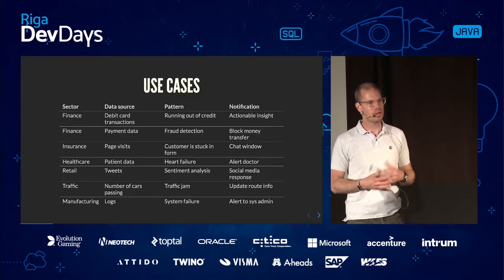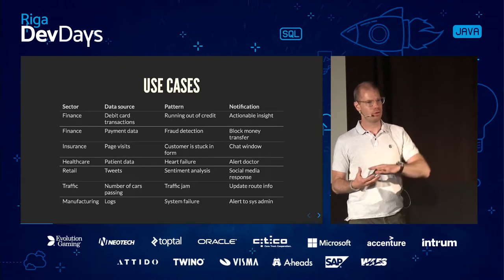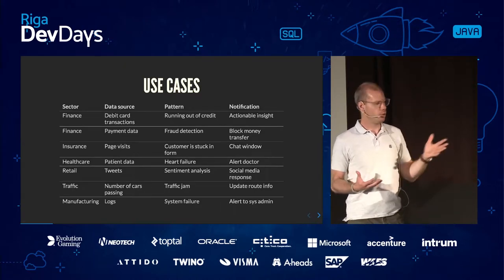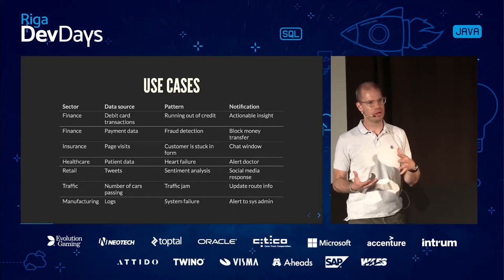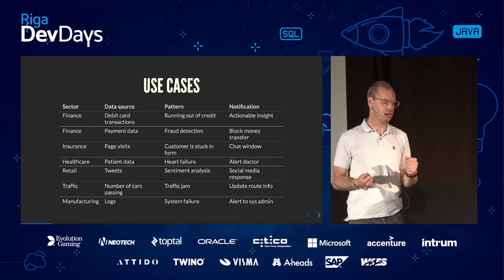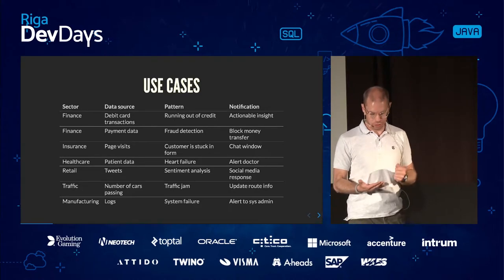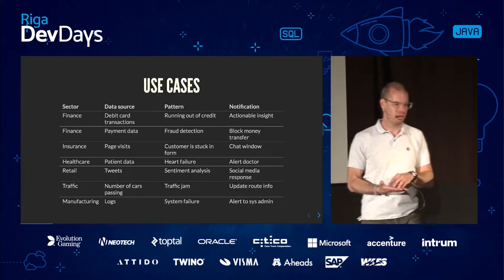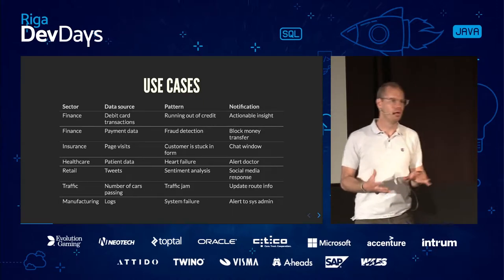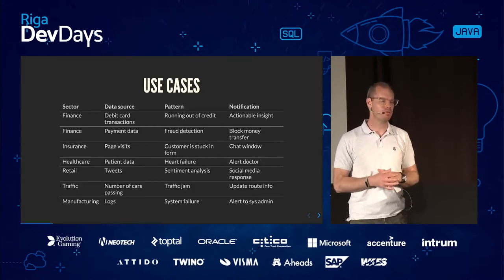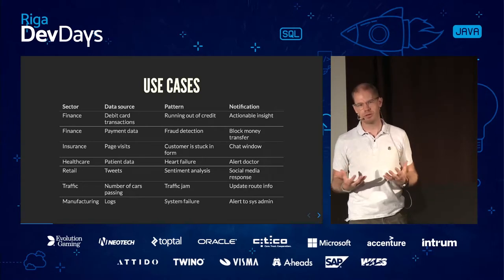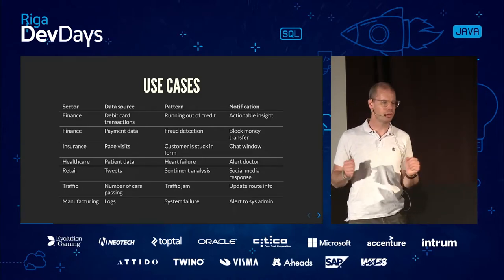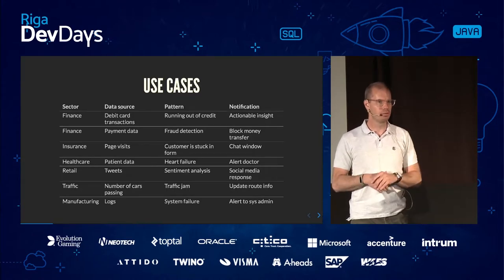Because we can detect that it's going to happen, we can say to this customer: maybe you want to transfer some money from your savings account, or maybe you should stop spending because you're almost running out. Another example: we can detect where a customer is. When I flew to Latvia, to Riga, we could say: this customer is in another time zone, another country — maybe he's interested in local currencies and local affairs. We call it actionable insights, all based on real-time data.